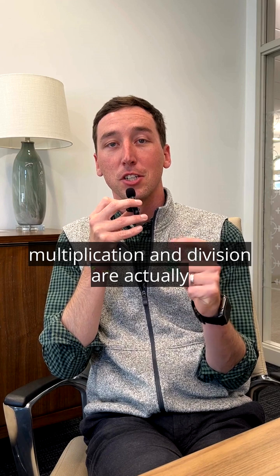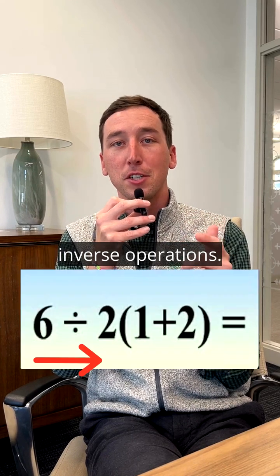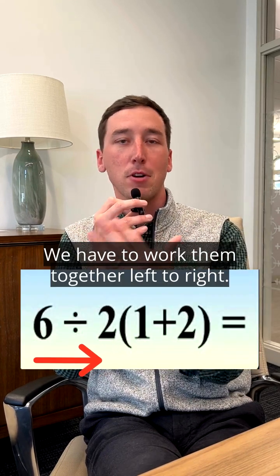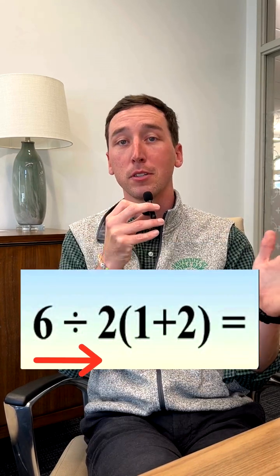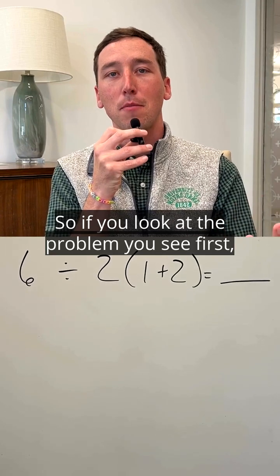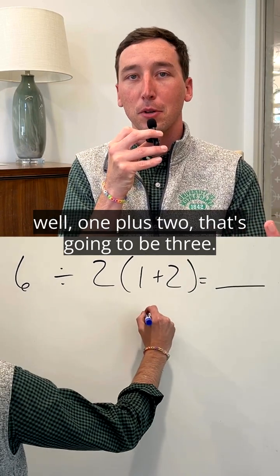But we have to remember the multiplication and division are actually inverse operations. We have to work them together, left to right. Multiplication doesn't always come before division. So if you look at the problem, you see first, 1 plus 2, that's going to be 3.